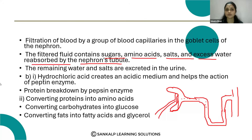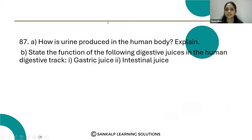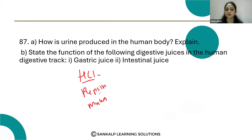This is the process of the formation of urine in the kidney. The second question is gastric juice. Gastric juice contains hydrochloric acid, pepsin, and mucus. Hydrochloric acid creates an acidic medium for the pepsin. Pepsin is able to act on protein only in the acidic medium, and the mucus protects the walls of the stomach from the HCl.